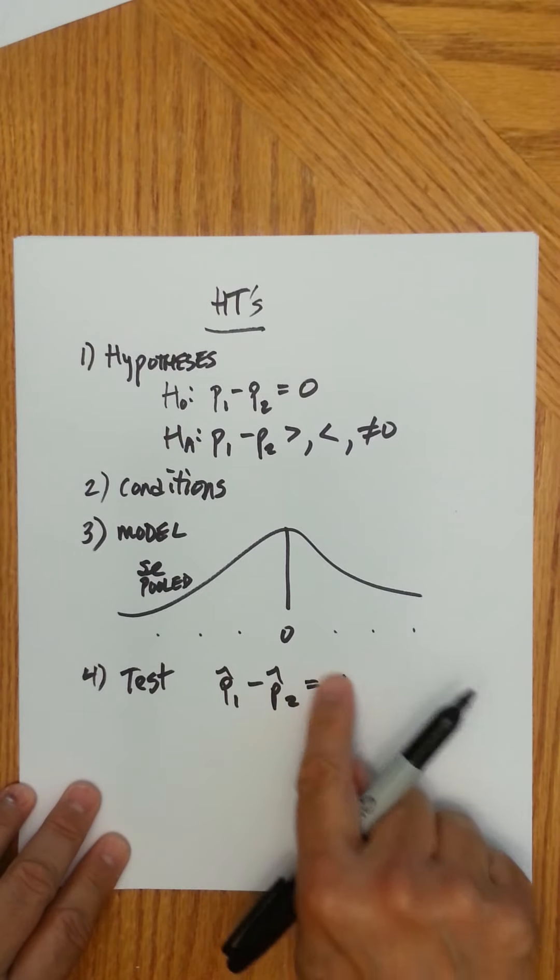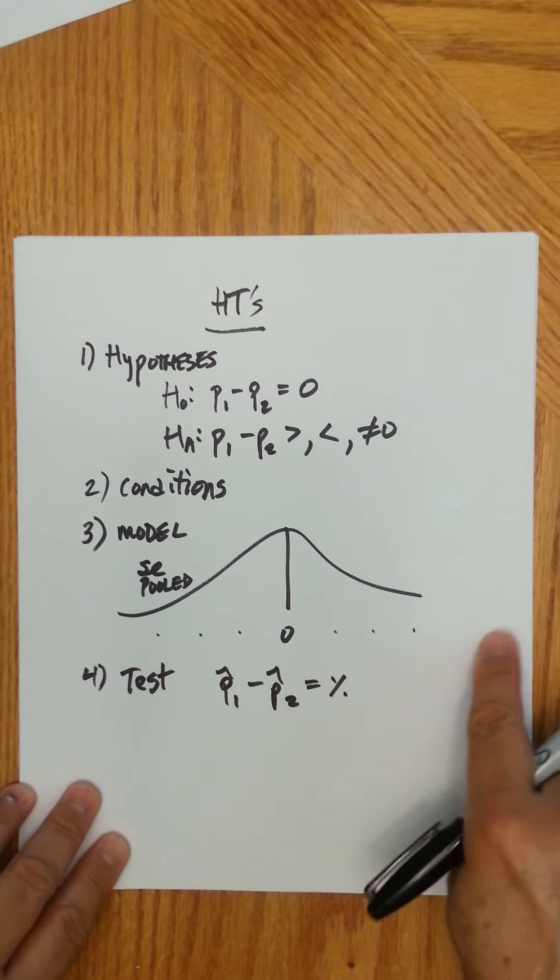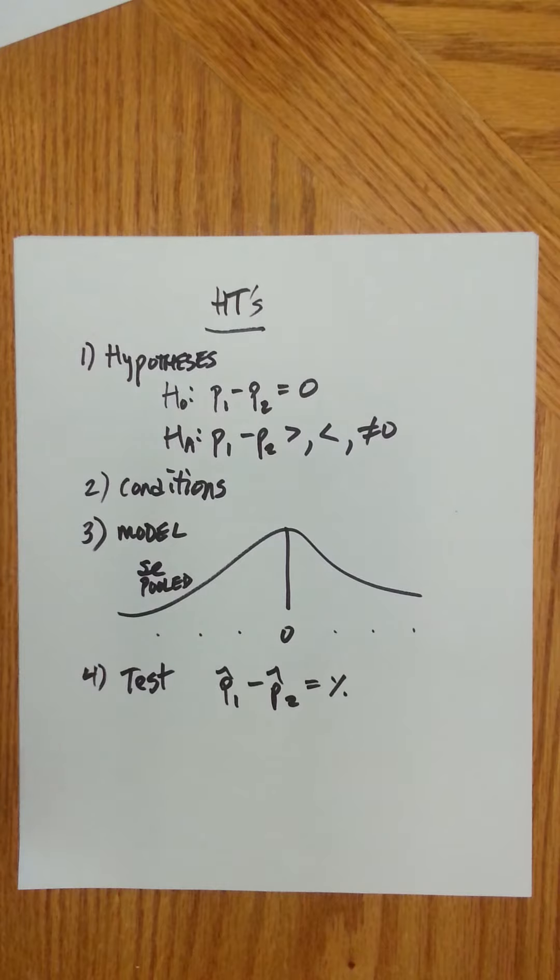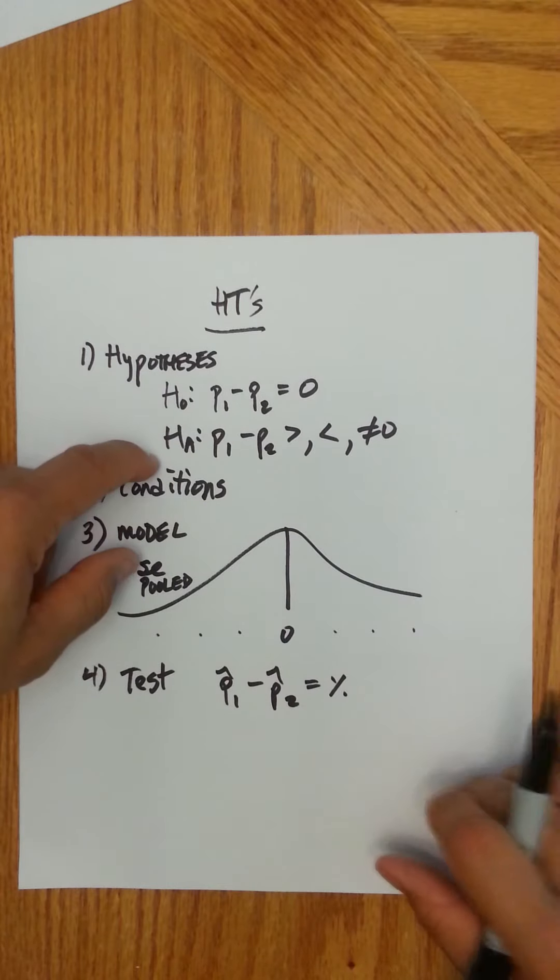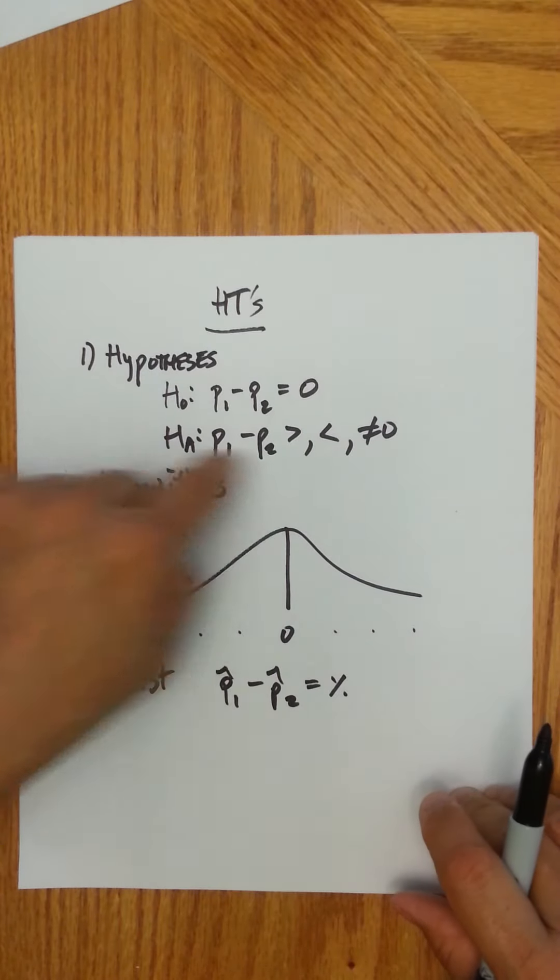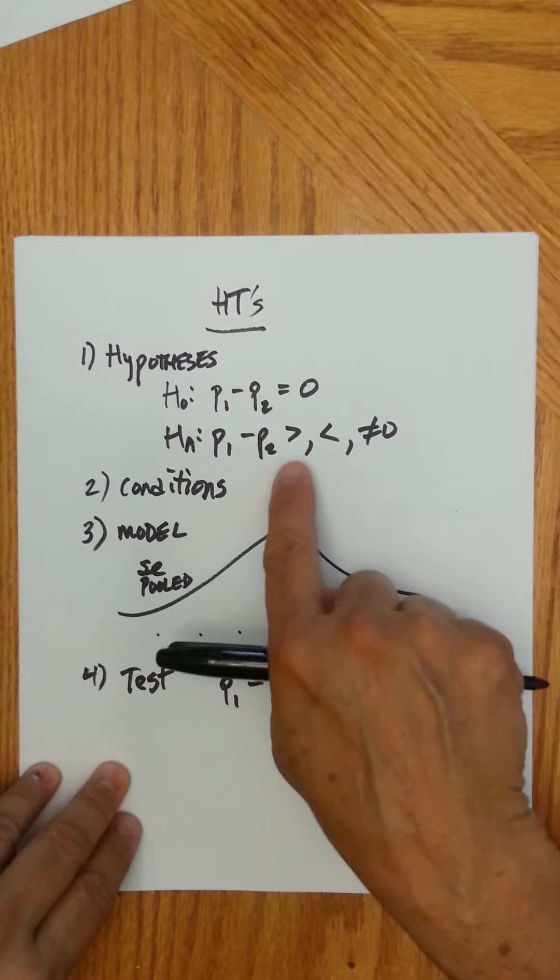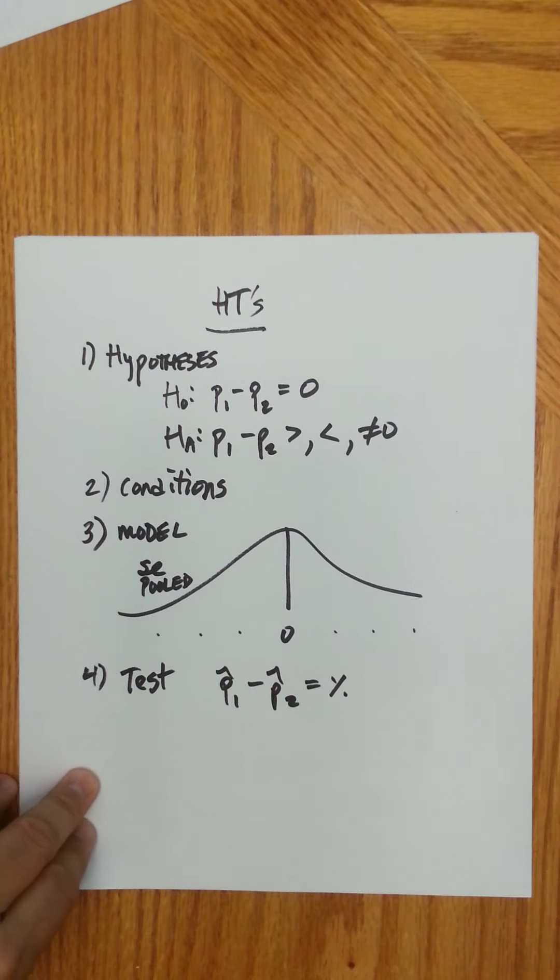But essentially, or if this difference is way far away, either here or here, then you say, oh, I don't think that zero is true, that the difference is zero. I think that there, I would say I would reject my null and then I'd say there's strong evidence that there is a difference between the two populations and so I would say whatever the alternative is, there's strong evidence for that.